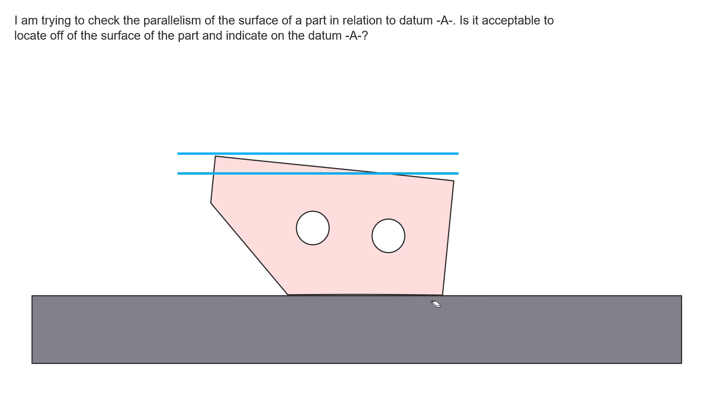So you can see here this is one instance where we would definitely not want to inspect this part because we would be rejecting a good part.